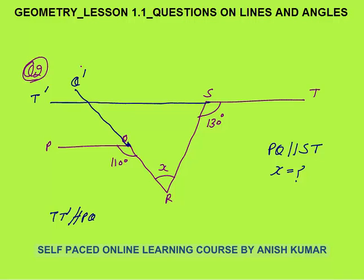Now this angle is 110. This angle will also be equal to 110 degrees because these two lines are parallel — T'Q' and PQ are parallel lines, and QQ' is a transversal. These angles are corresponding angles; they lie on the same position with respect to the transversal and are always equal. So this corresponding angle is 110, and therefore this angle would be 70 degrees because on a straight line the total angle is 180 degrees.